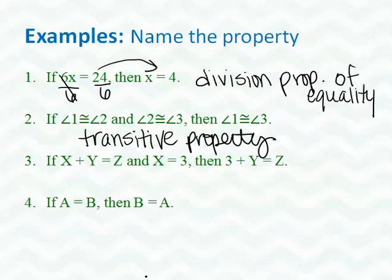Number 3, if X plus Y equals Z and X is equal to 3, then 3 plus Y equals Z. Now, I started out with the statement X plus Y equals Z. Well, then I was told that X equals 3. So what I did was, I put the 3 in for the X. Or in other terms, I substituted the 3 in for the X, and I got 3 plus Y equals Z. So this would be an example of the substitution property.